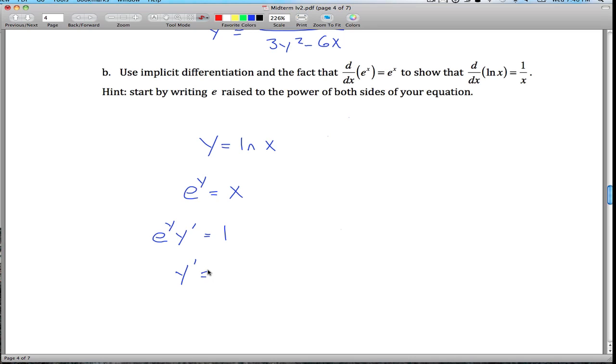solving for y prime, you get y prime equals 1 over e to the y, but to simplify, we know that e to the y is equal to x, so instead of writing e to the y down here, we write 1 over x, which sure enough is what we're supposed to get, and that's the end of question 3.